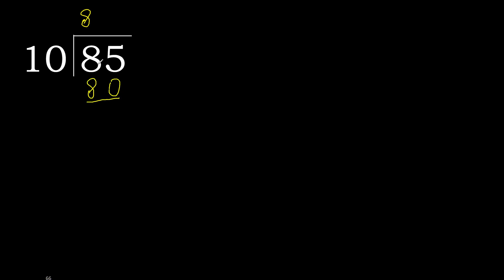85 minus 80 is 5. Next — that is not a whole number, therefore complete. Always complete with 0 here, with a decimal point: 0 point.